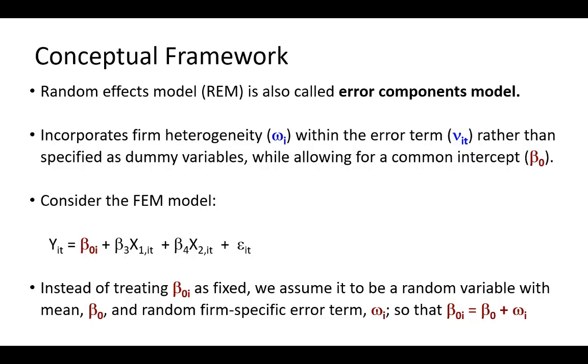To see how this works, consider this panel model with two independent variables. Instead of treating the intercept term beta sub zero i as fixed, we're assuming it to be a random variable with mean beta sub zero, common to all firms, and the subject-specific random error term omega.